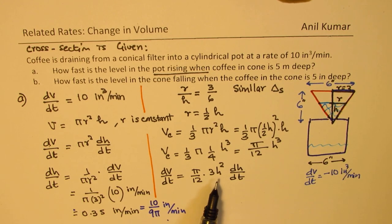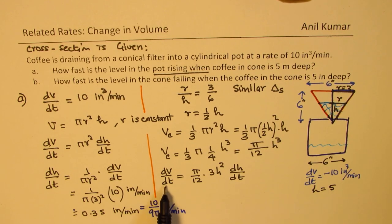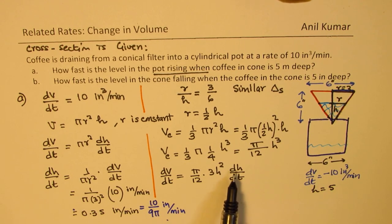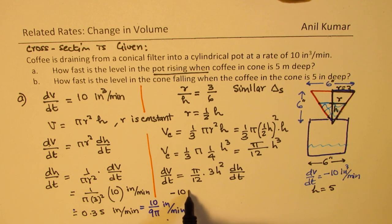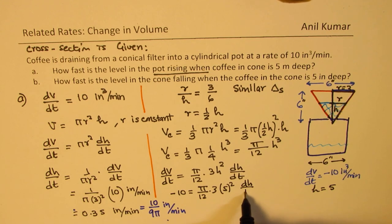So now we know the height. We know height should be 5. We know dV/dt is -10. And so we can easily find dh/dt. So we can isolate it. So this is -10 for us. And we have π/12 times 3, and height is 5 squared, and we need to find dh/dt.